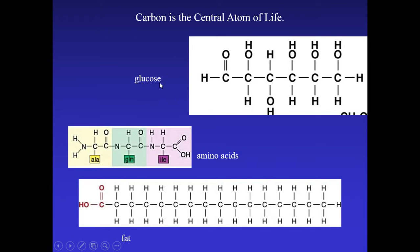Here's glucose, a carbohydrate — a simple sugar — made of just carbon, oxygen, and hydrogen. An amino acid, the basic building block of protein, contains some different atoms such as nitrogen. And here is the basic structure of a fat or lipid: a long hydrocarbon chain with an attached functional group.